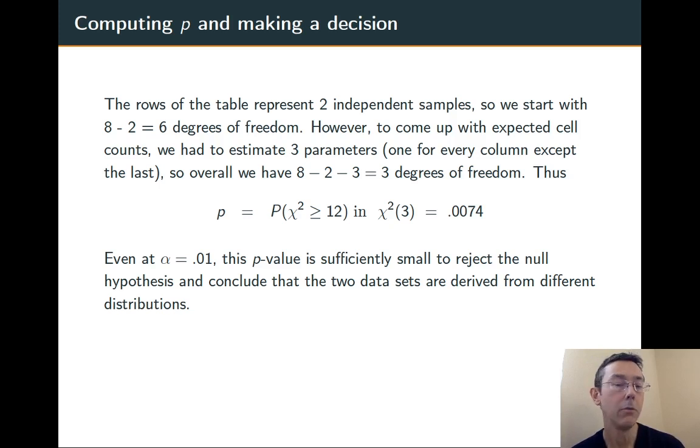We compute our p-value the same way as always: the probability of randomly getting a chi-squared value greater than or equal to 12 in the chi-squared(3) distribution. In this case, we get p = 0.0074.